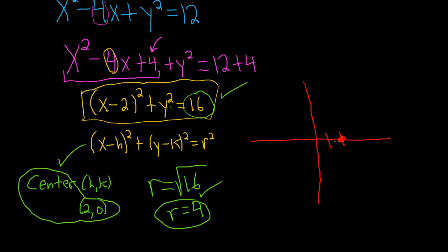From the origin, you just go right 2 and up 0. And then because the radius is 4, what you do is you just travel a distance of 4 from the center. So the easiest way to do this by hand is to just go up and down, left and right by 4.